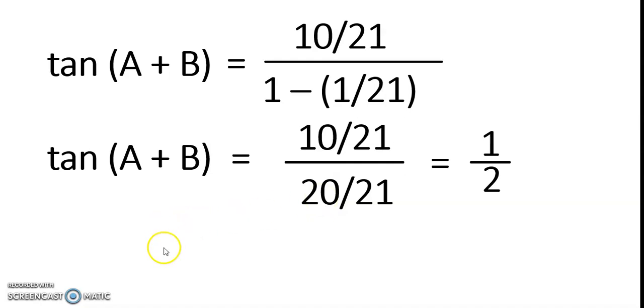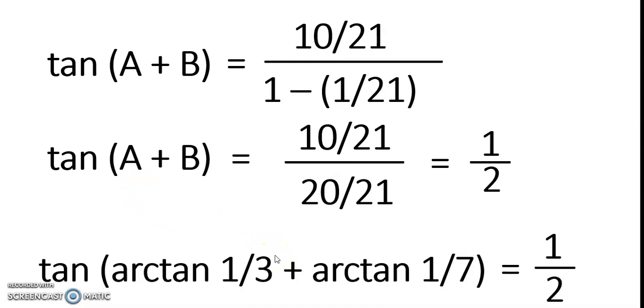If we substitute back arctan 1 over 3 for A and arctan 1 over 7 for B, that's tangent of arctan 1 over 3 plus arctan 1 over 7 is equal to 1 half.